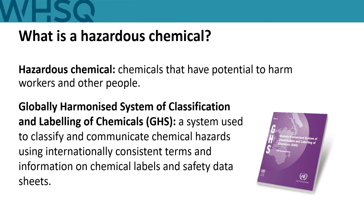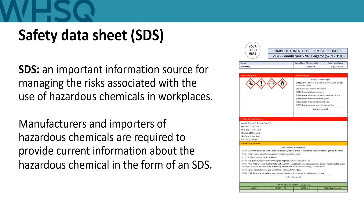Keep your workers safe by knowing what chemicals are at your workplace and the harm they could cause. The term hazardous chemical captures those chemicals that can cause harm to workers and other people during their storage, handling or use. The work health and safety legislation uses a globally harmonised system of classification and labelling of chemicals known as GHS to determine what is hazardous. The safety data sheet, or SDS, is an important information source for managing the risks associated with the use of hazardous chemicals in workplaces.